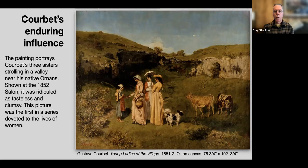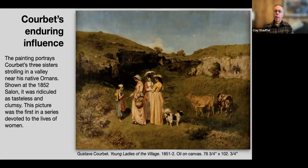Here's another piece by Courbet from a similar time. In this painting, Courbet's three sisters are out for a walk. It was shown at the 1852 Salon and was ridiculed as tasteless and clumsy. Courbet did a number of series of pictures devoted to the lives of women, which in itself would have been controversial at the time. You can see the painting has a flatness to it that a lot of the calculated history paintings did not have.